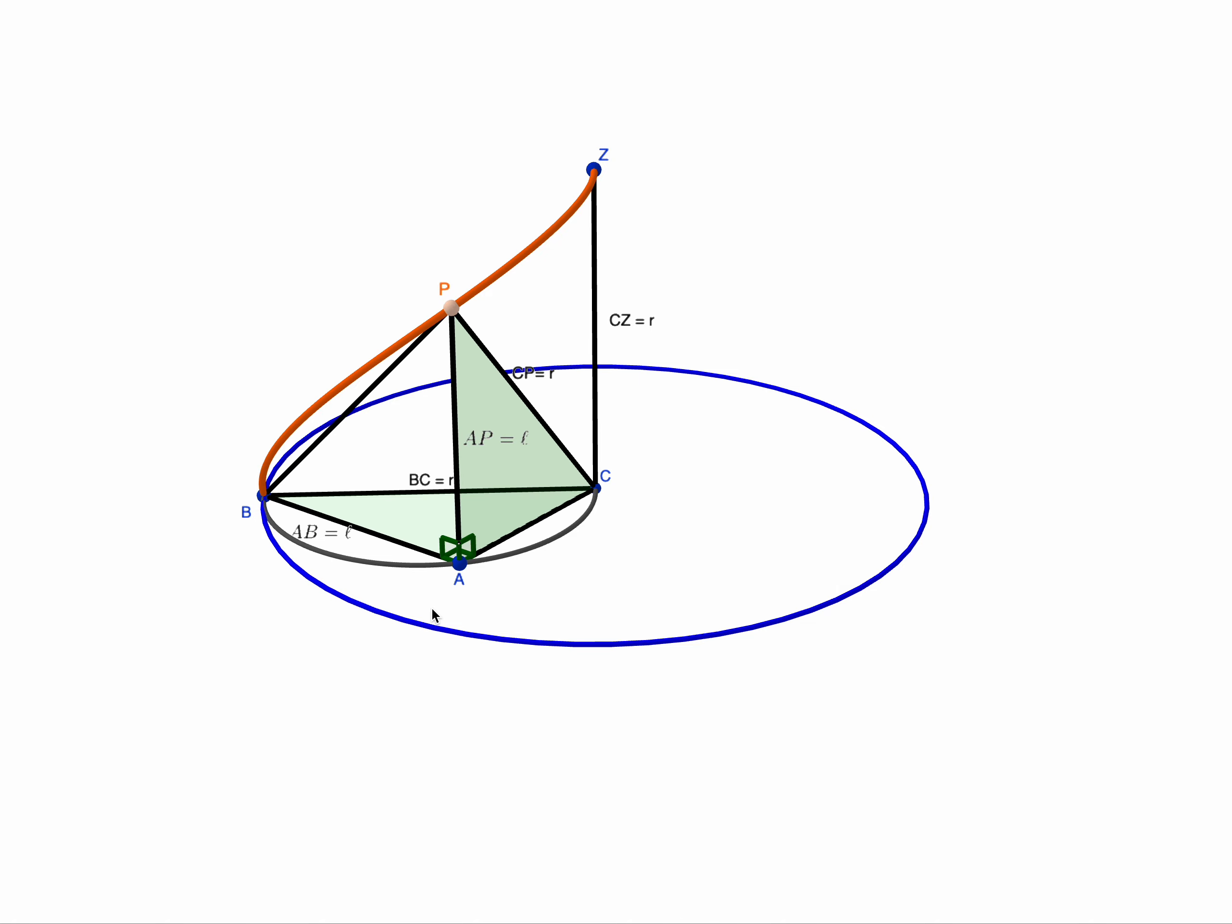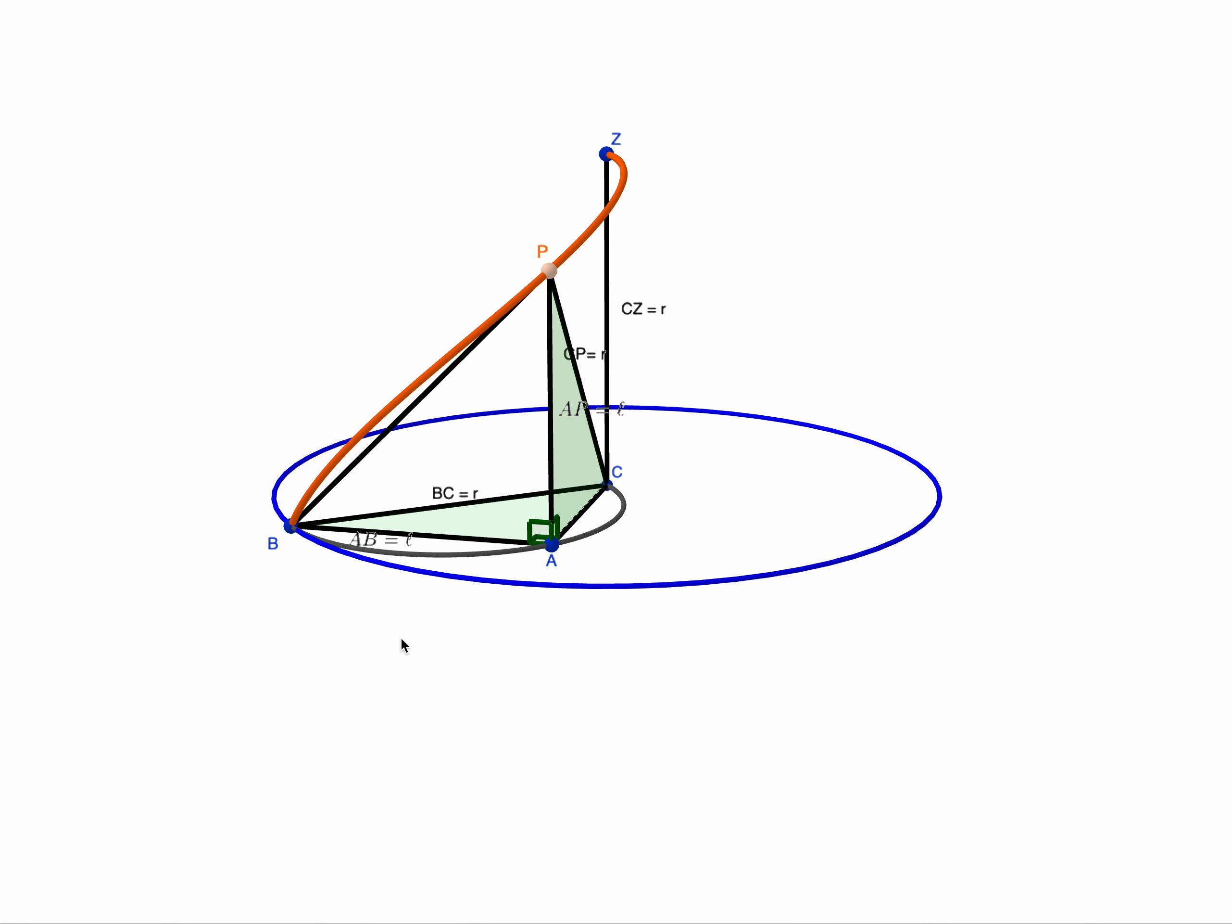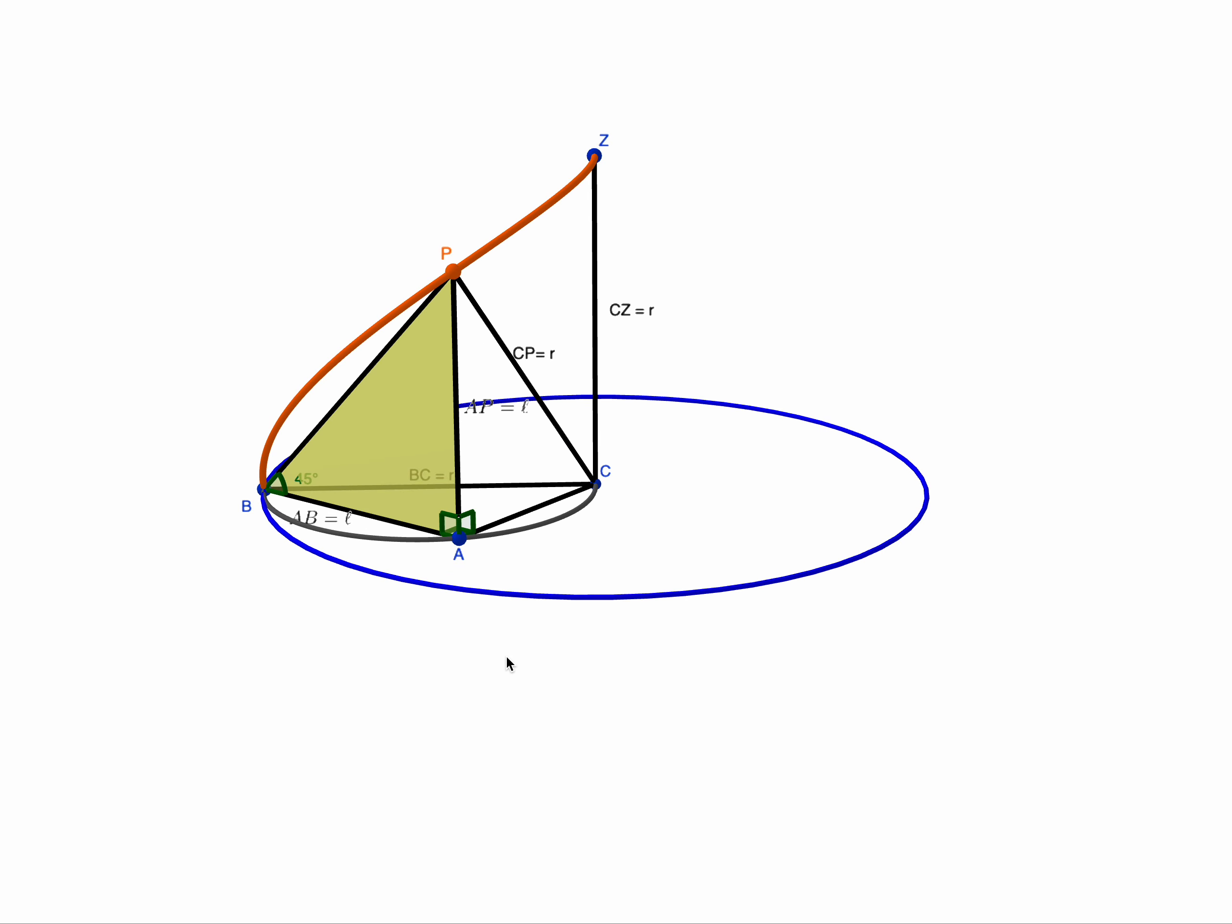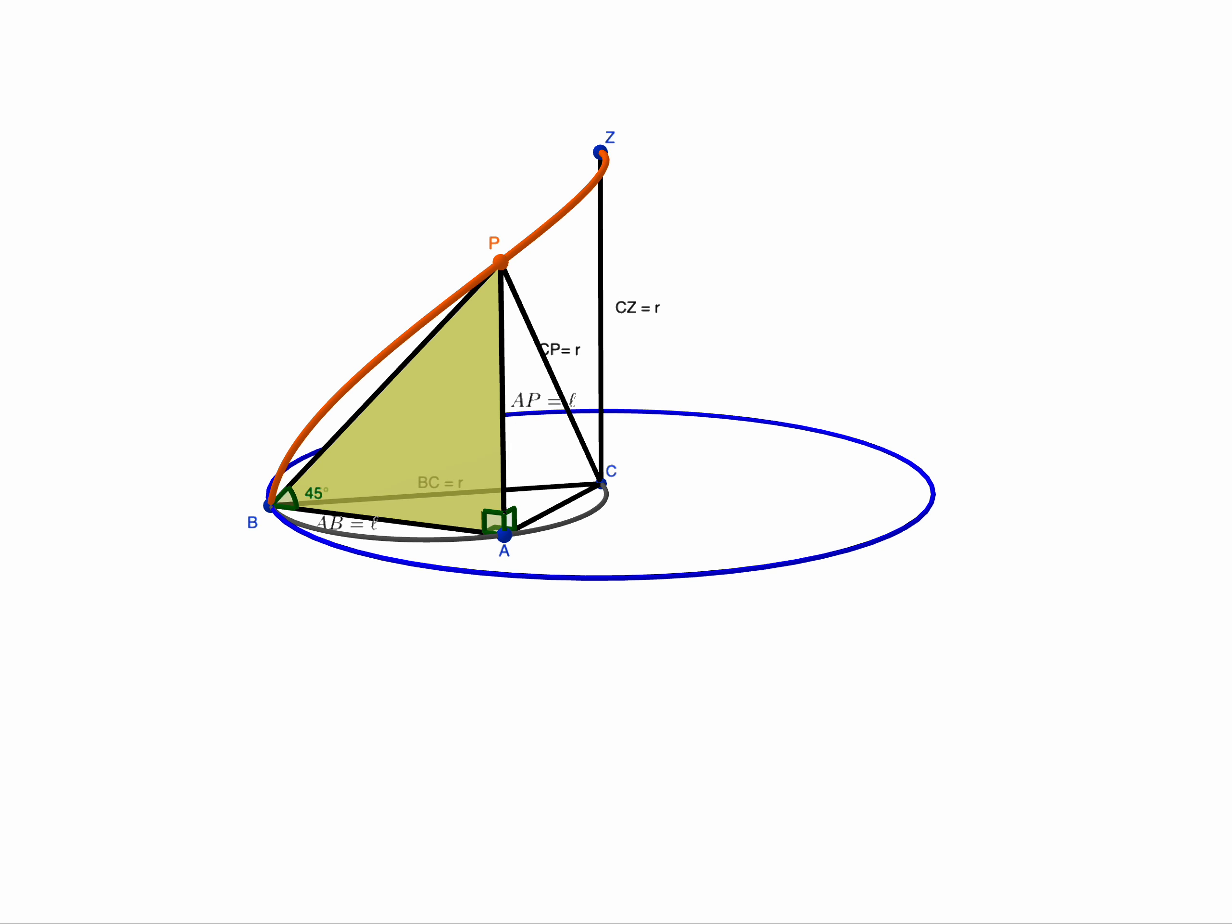Now what that means is when we translate it to this triangle here, we've got a right angled isosceles triangle there. ABP has a right angle at A, has a 45 degree angle at B, and that's due to the fact that we've got an isosceles triangle. So pretty basic geometric facts here. The important thing to notice is that's true no matter where P is.